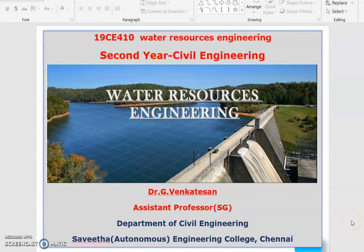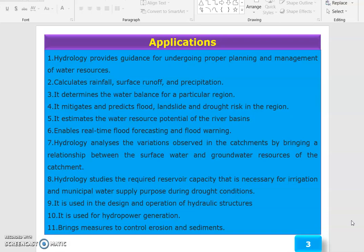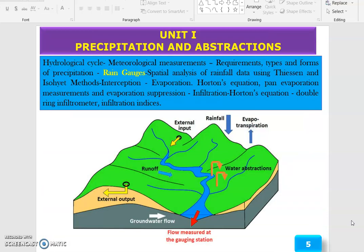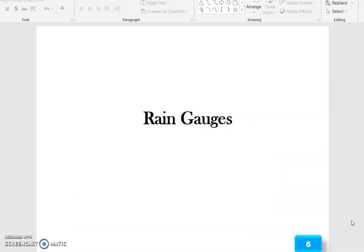Good morning to all. Today we are going to discuss water resources engineering under the topic of rain gauge. First of all, we should know what is the use. We have to find the precipitation level, and how the rain gauge stations play a vital role in this aspect.